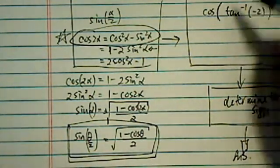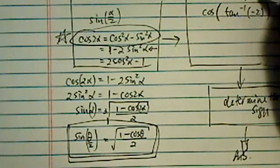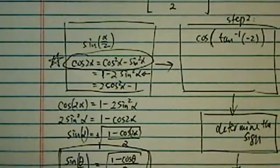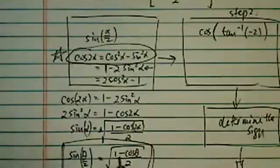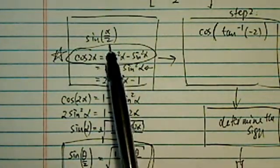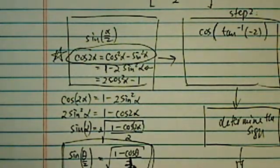Okay. Now, second step here. Step 2 over here. Now, we know sine of α over 2 is involved with cosine of the α.